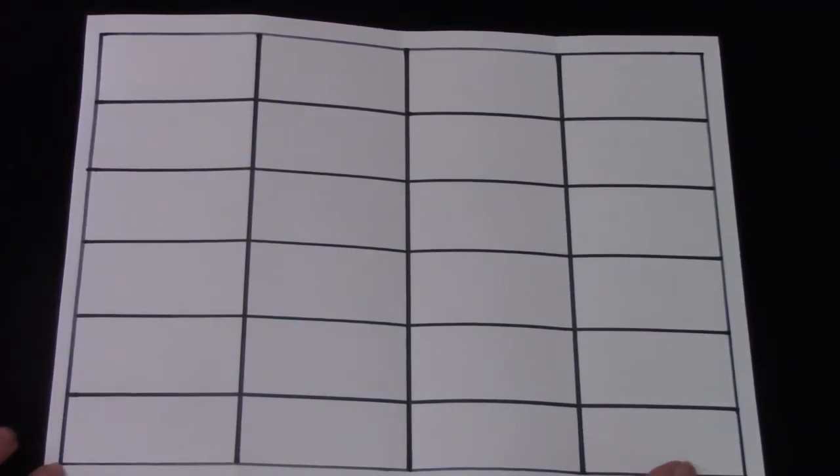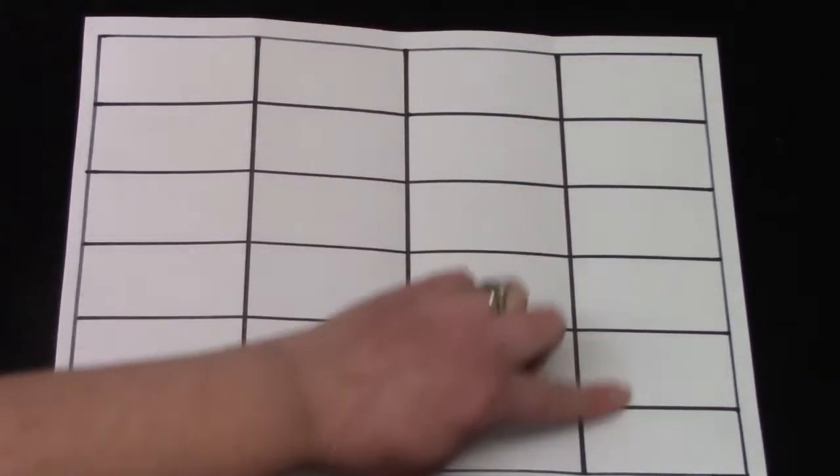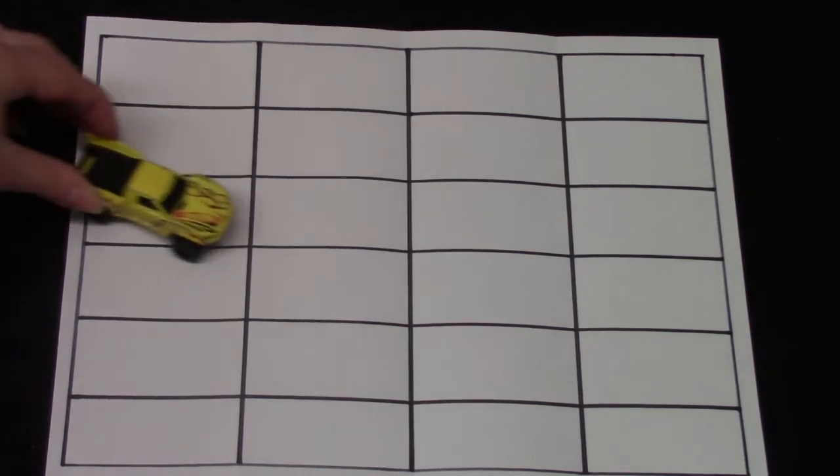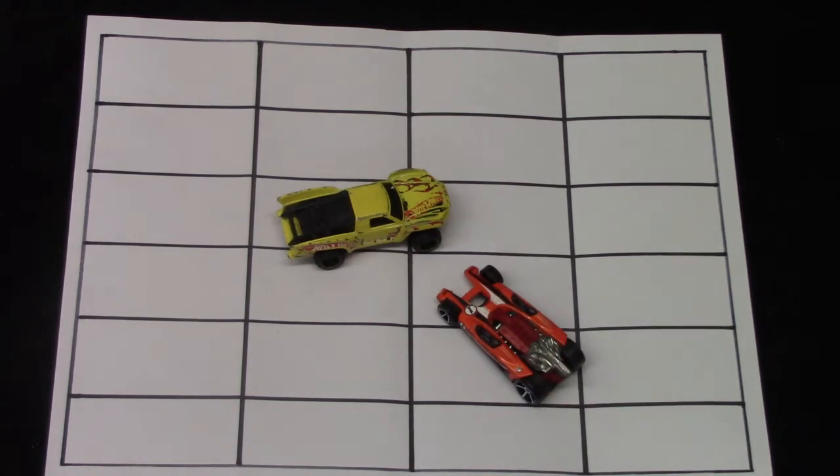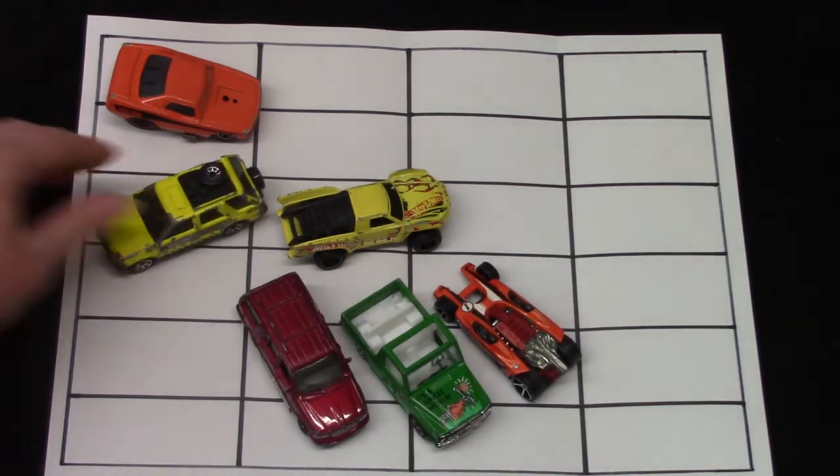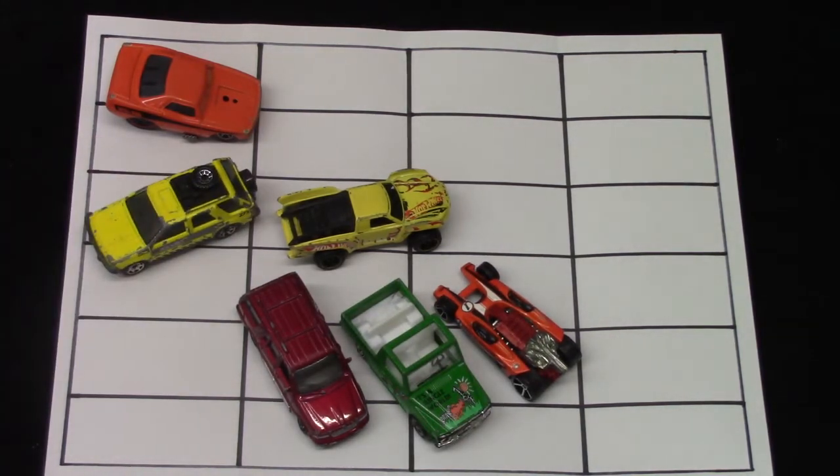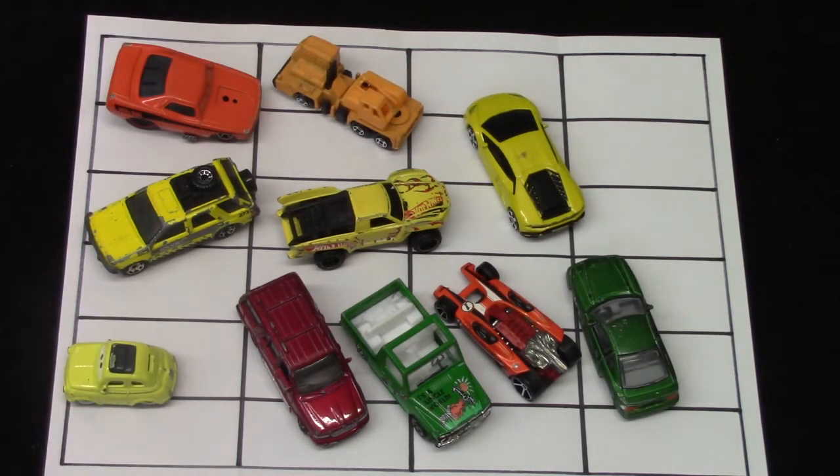They're in a grid and they're all an equal size and an equal number. Well, today we are going to be graphing some cars. I think that I would like for us to graph the colors of the cars. Do you see lots of different colors to these cars?